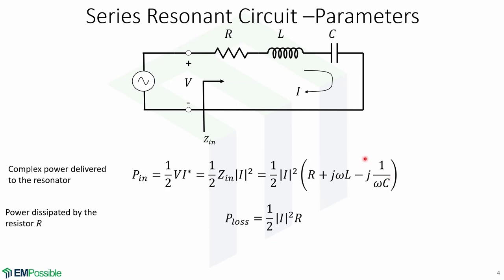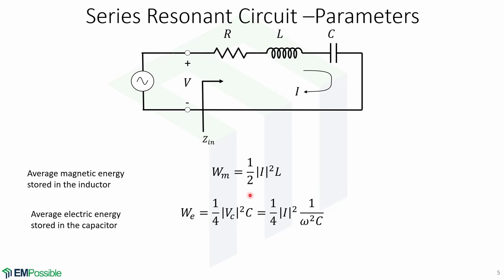Now let's look at some parameters of the series resonant circuit. The complex power delivered to the resonator is given by one-half of the voltage times the conjugate of the current. With Ohm's law we can write this in terms of the current, equal to one-half of the input impedance times the magnitude of the current squared. The power dissipated by R is P_loss, equal to one-half |I|² times R. The average magnetic energy stored in the inductor is one-half |I|² times L, and the average electric energy stored in the capacitor is one-fourth |V_C|² times C, which equals one-fourth |I|² times 1 over omega² C.